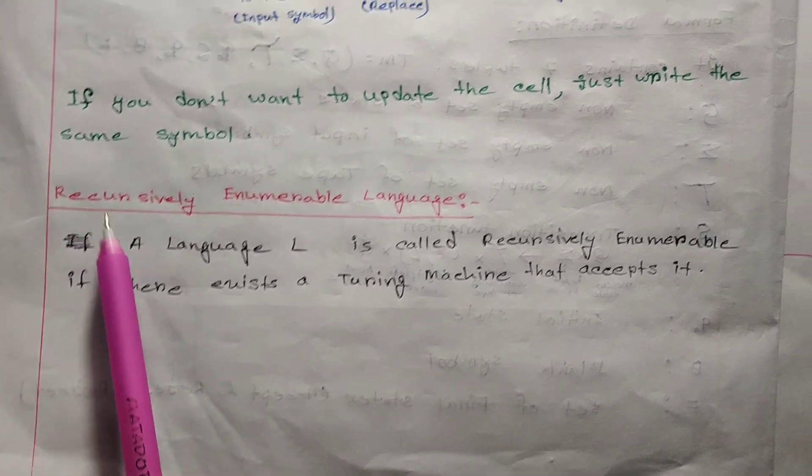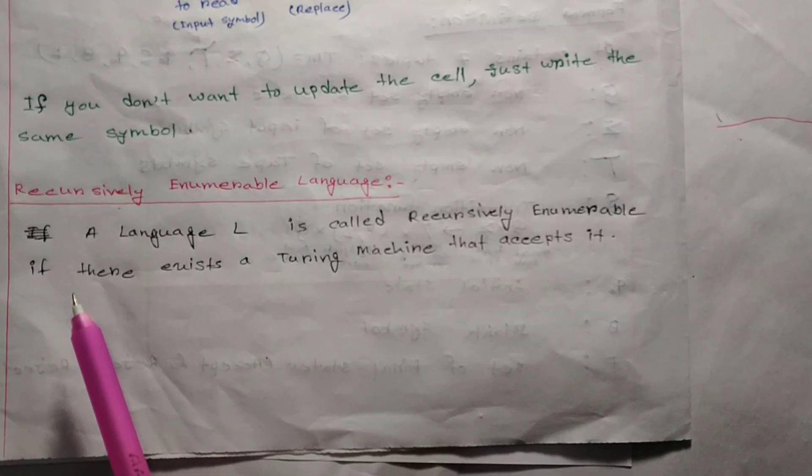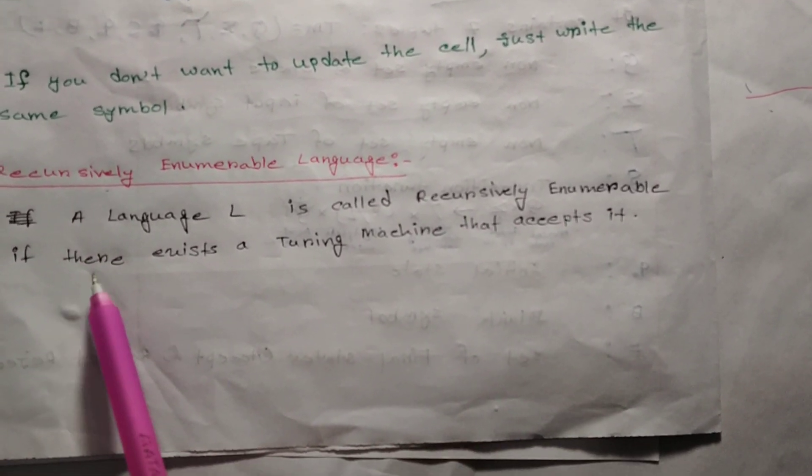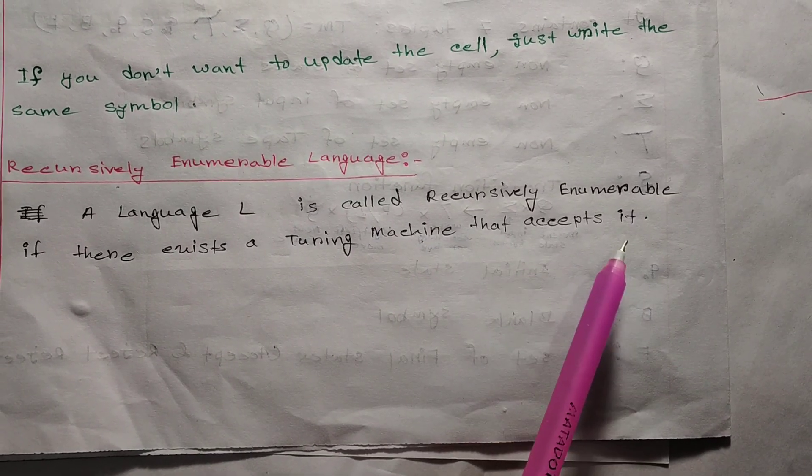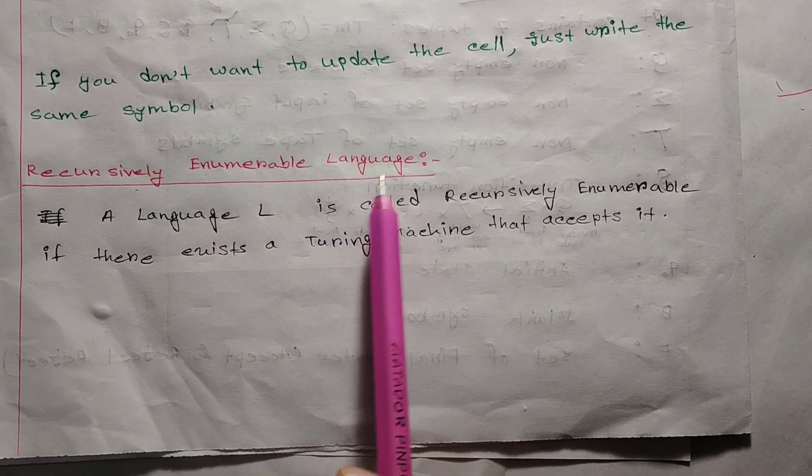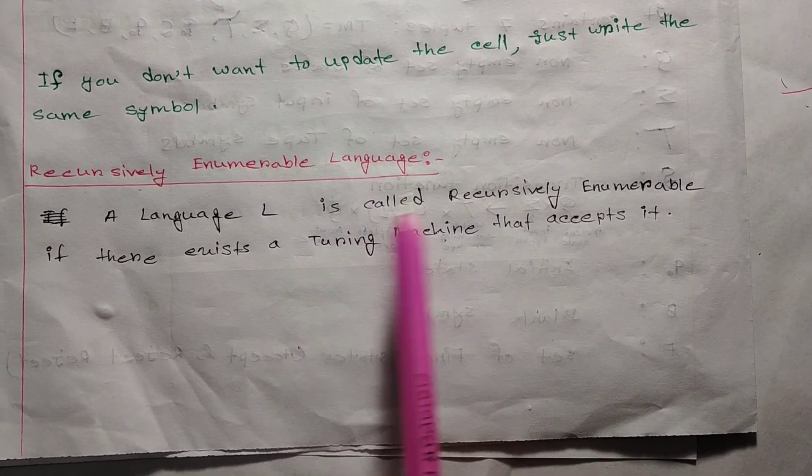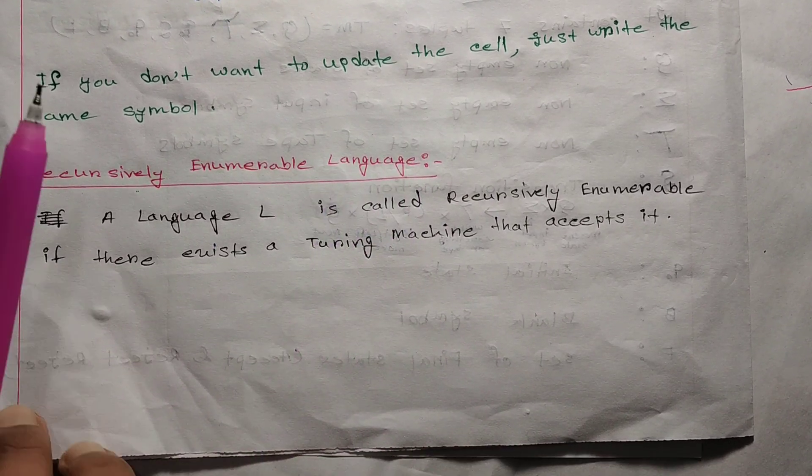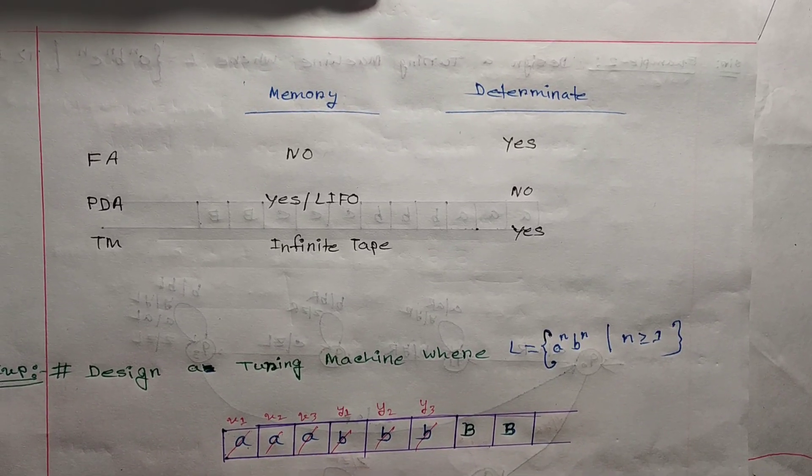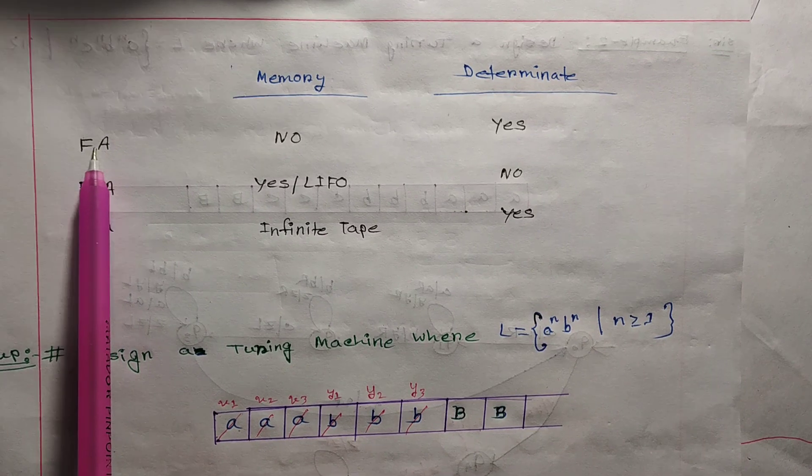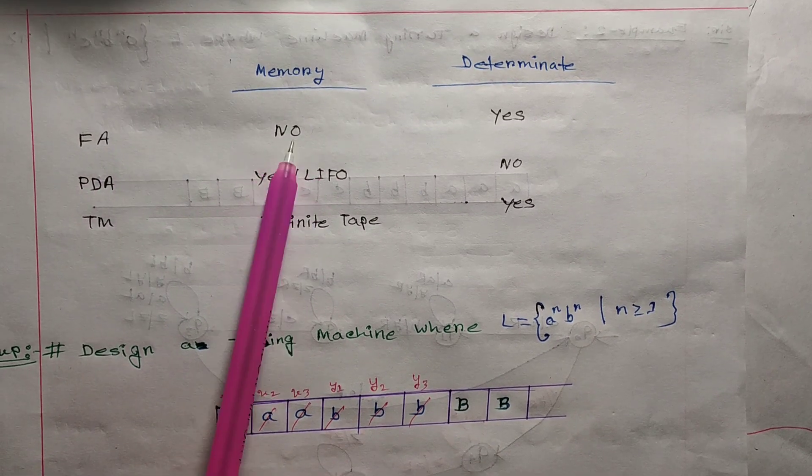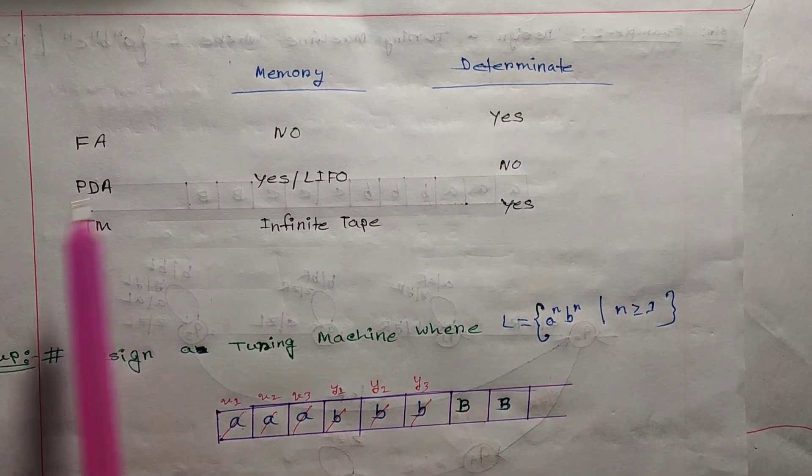A language L is called recursively enumerable if there exists a Turing machine that accepts it. This means the language is acceptable by a Turing machine.